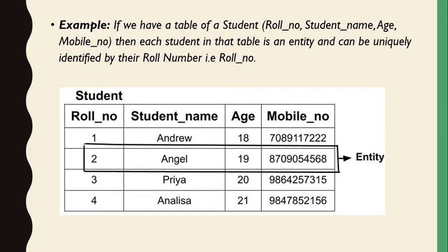In this table, the roll number one is unique and is not repeated. Sometimes student names are repeated, and age is also sometimes repeated, but students are identified by their roll number. So these are the entities — real-world objects that have their own properties, describing them by roll number, name, age, and mobile number. That record is an entity.